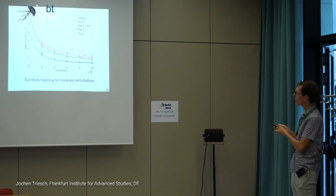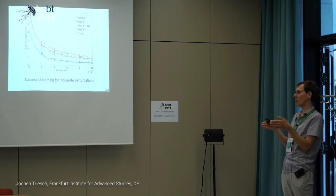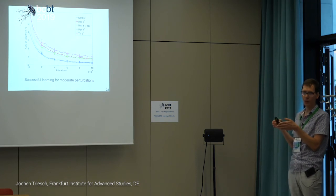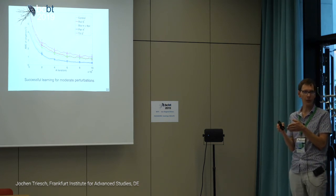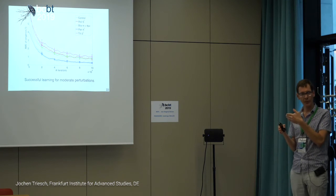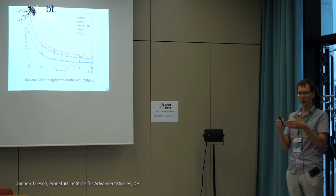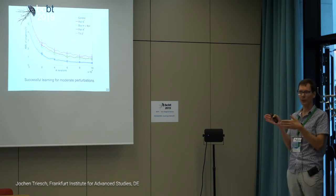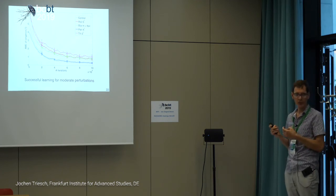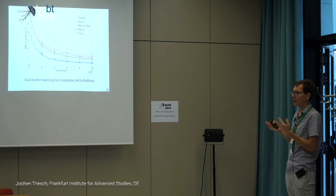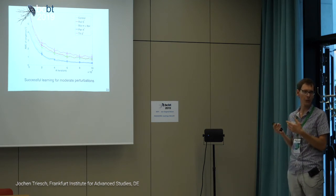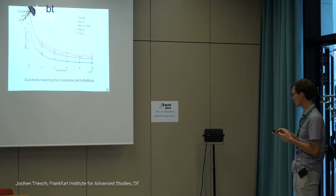The one case with no decrement in accuracy is when one eye is turned to the side horizontally. In this situation, the model can use its own motor degrees of freedom — the vergence eye movements it generates — to fully compensate for this disturbance. Any disturbance that can be compensated with motor degrees of freedom, the system will happily learn to use them to compensate for it.